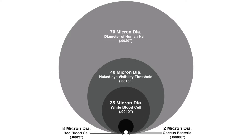If you Google 'size of a micron,' you'll find many diagrams like this one. My problem with this diagram is that once you get below the diameter of a human hair, it's a list of things we can't see, and that doesn't lead to a very intuitive understanding at all. I propose we scale up a micron to something more tangible.